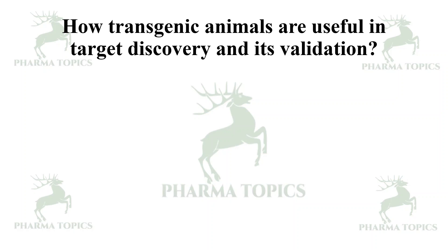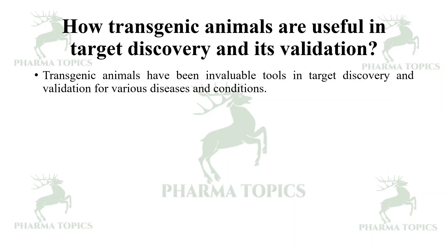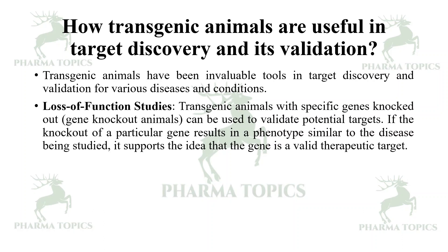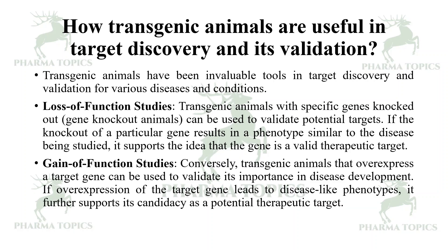Transgenic animals are invaluable tools in target discovery and validation. First, in loss-of-function studies, gene knockout animals can validate potential targets — if a knockout of a particular gene results in a phenotype similar to the disease being studied, it supports that gene as a valid therapeutic target. Conversely, in gain-of-function studies, transgenic animals that overexpress a target gene can validate its importance — if overexpression leads to disease-like phenotypes, it further supports its candidacy as a potential therapeutic target.